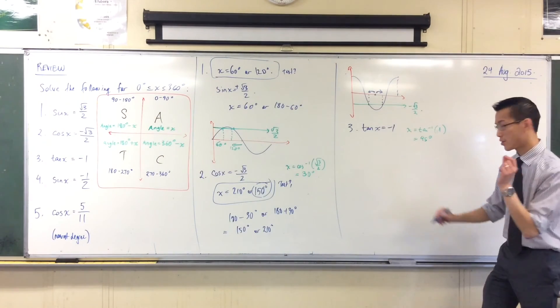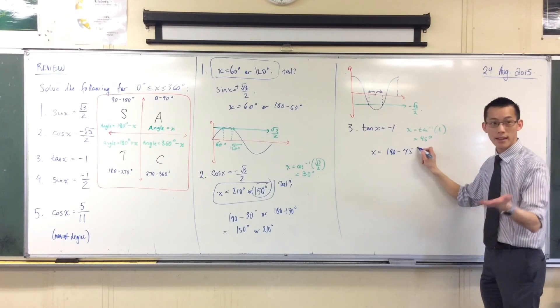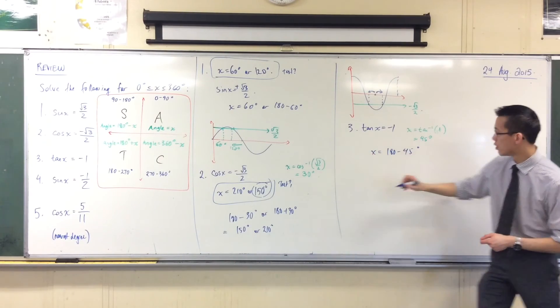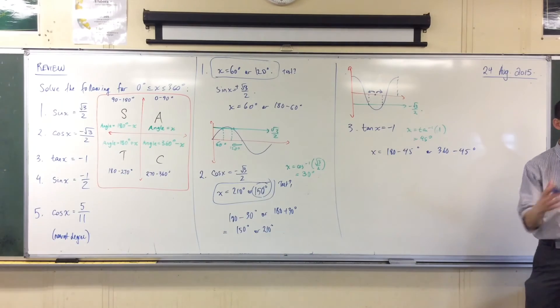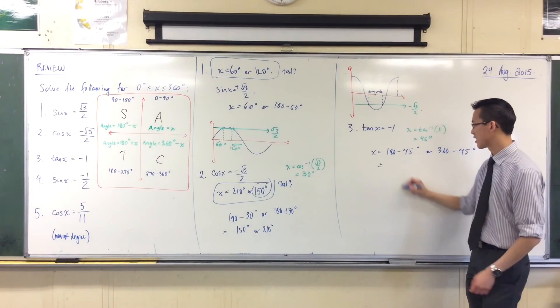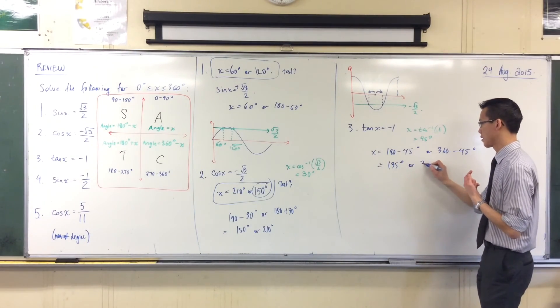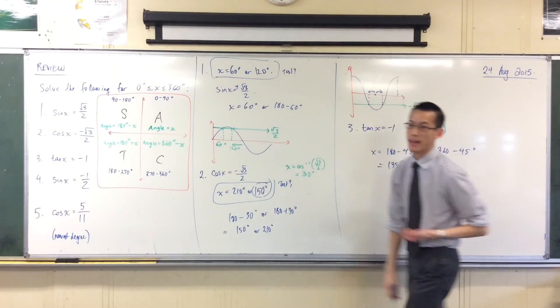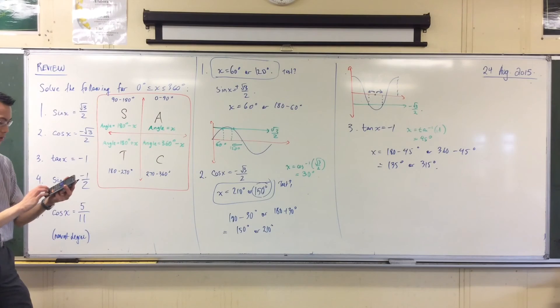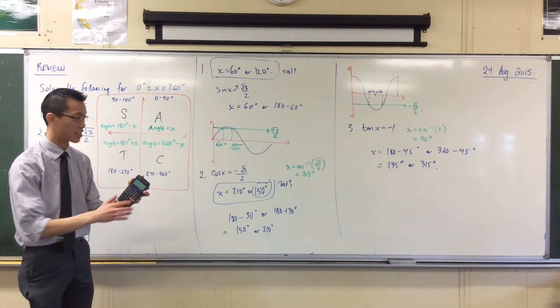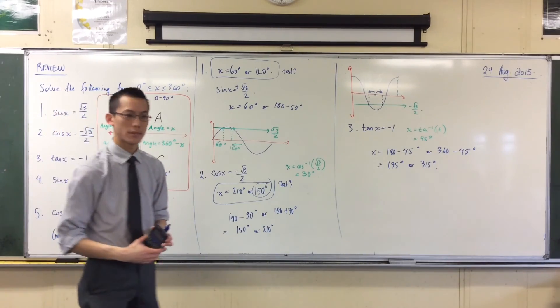So in quadrant 2, x is going to be 180 take away that 45 degrees, and in quadrant 4, I'm going to be 360 take away the 45 degrees that you told me, right? So that's going to give me 135, or what's this one? 315. Fantastic. 315, bam. And again, you can check your calculator, tan 135, it gives us negative 1, as expected, and tan 315, same result.